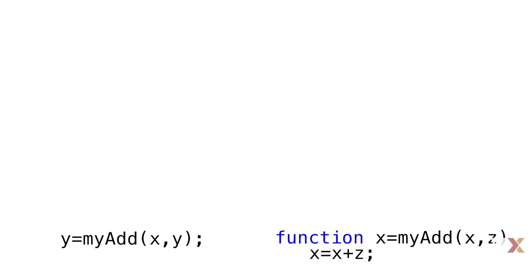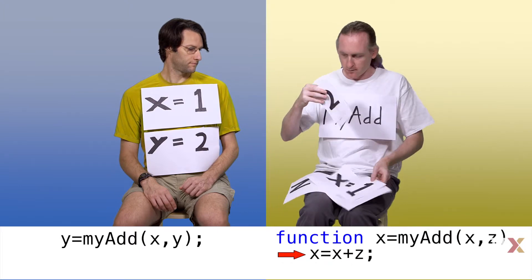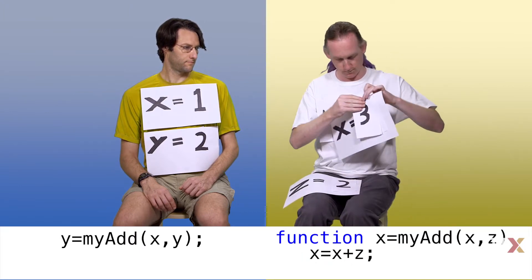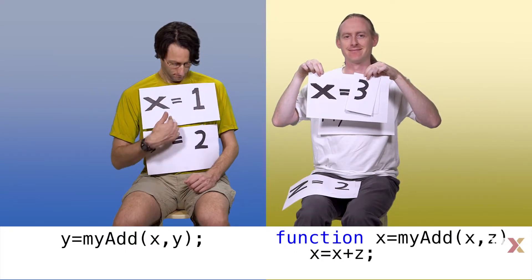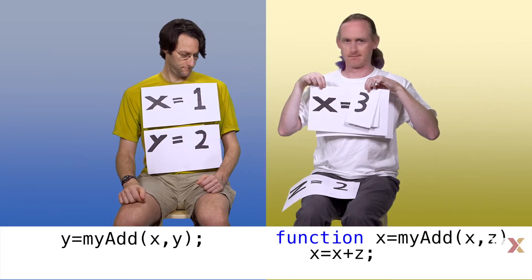MyAdd now stores the second value in z. The function takes these two values, adds them together, and stores them back in the variable x. Notice that the variable x inside the function has a different value than the variable x outside the function. This is possible because the two variables are not of the same scope.